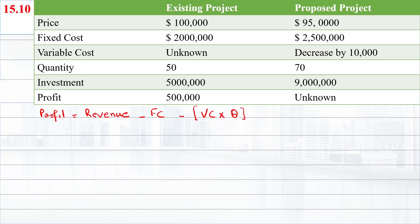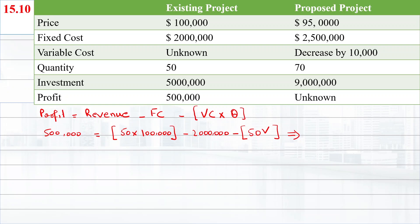Profit is $500,000. Revenue is 50 units multiplied by $100,000 sale price, minus fixed cost of $2,000,000, minus variable cost times 50. By simplifying this equation, we get variable cost equal to $50,000. This variable cost will be used to calculate the variable cost of the proposed situation.